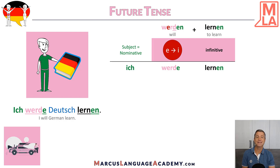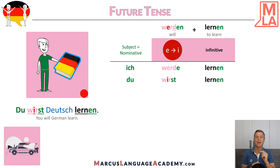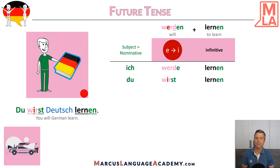The second person is 'Du wirst lernen.' Here it's irregular — there's a change in the root. We have WIRST: instead of the E, we have an I. 'Du wirst Deutsch lernen.' In the image, the red dot reminds us there's something irregular here. 'Du wirst lernen.'